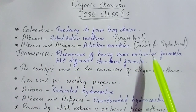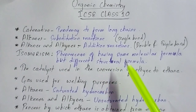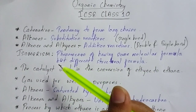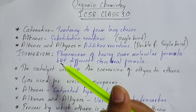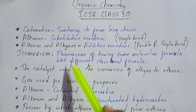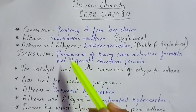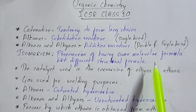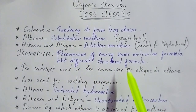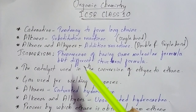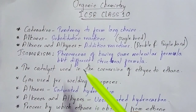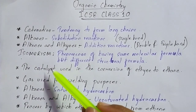The next important phenomenon is isomerism. What is isomerism? It is the phenomenon of having the same molecular formula but different structural formula. You must be thorough with this - you might be asked for a definition or in 'name the following' type questions. Such compounds are known as isomers.